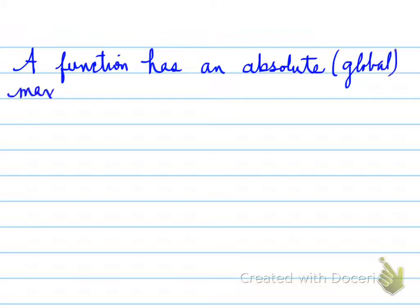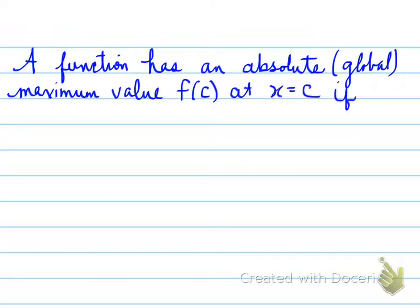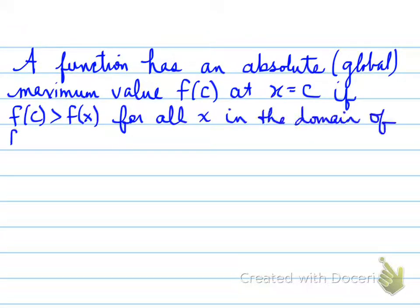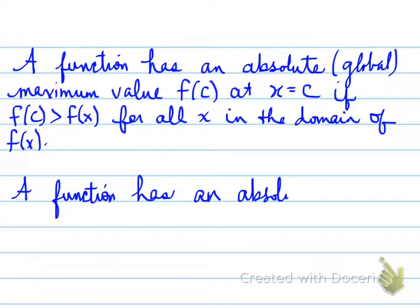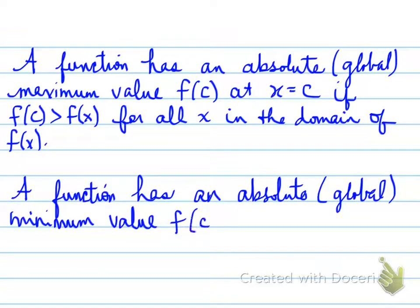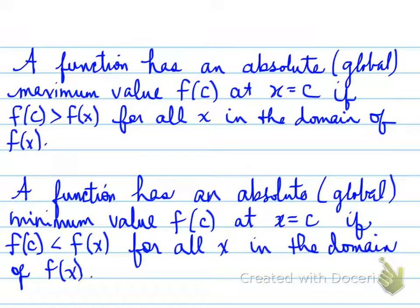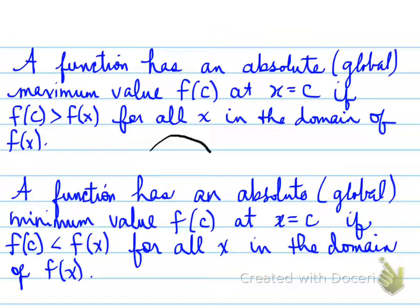A function has an absolute or global maximum value, f(c), at x equals c, if f(c) is greater than f(x) for all x in the domain. What that means is, in order to have an absolute maximum, it must be the maximum everywhere. For example, a parabola that opens down will have an absolute maximum, and a parabola that opens up would have an absolute minimum.